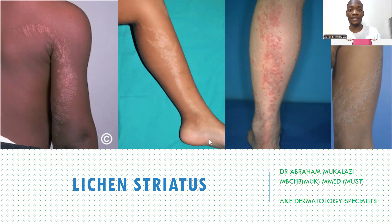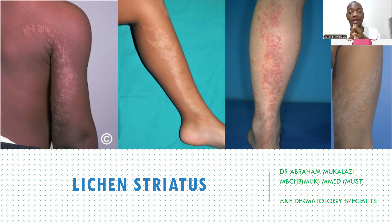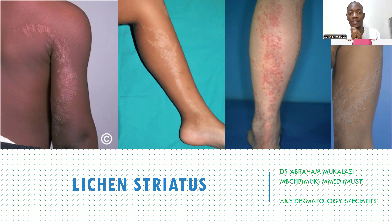Hello, everyone. My name is Dr. Abraham from A&E Dermatology Specialists. In this segment, we shall be covering conditions that have a clinical similarity to lichen planus — we call them lichenoid dermatosis. We shall start today with a short video on lichen striatus: who gets this condition, how does it look, and how do we manage it.